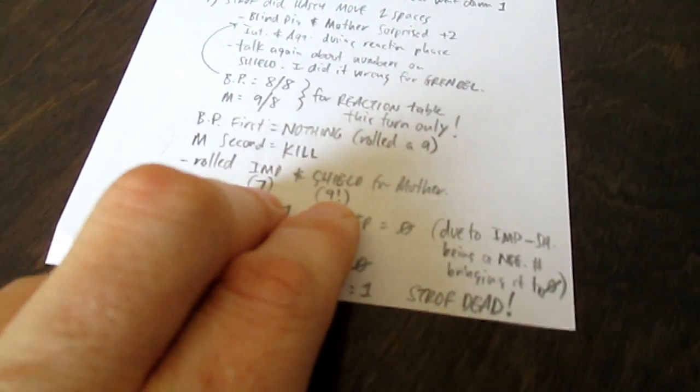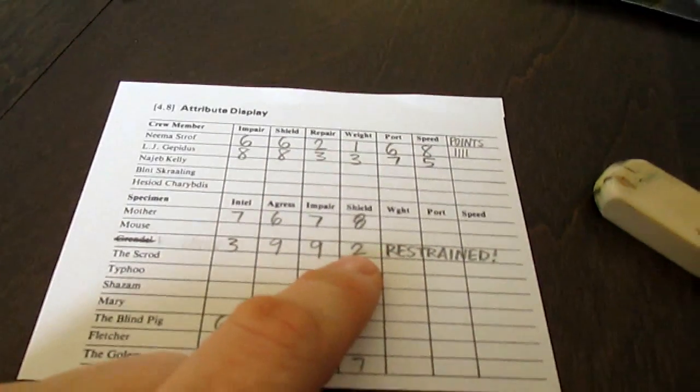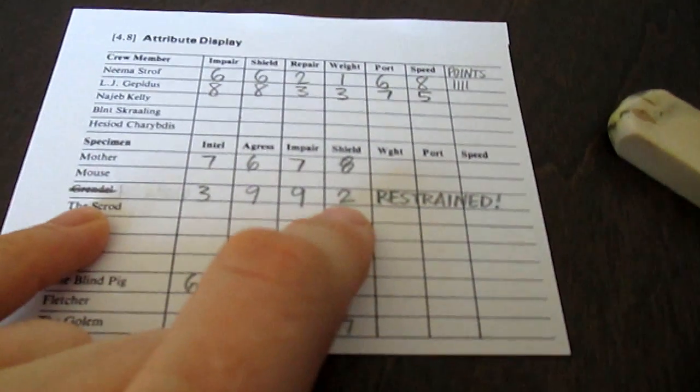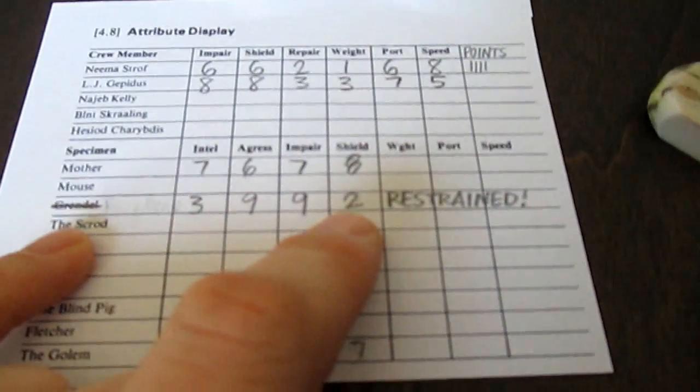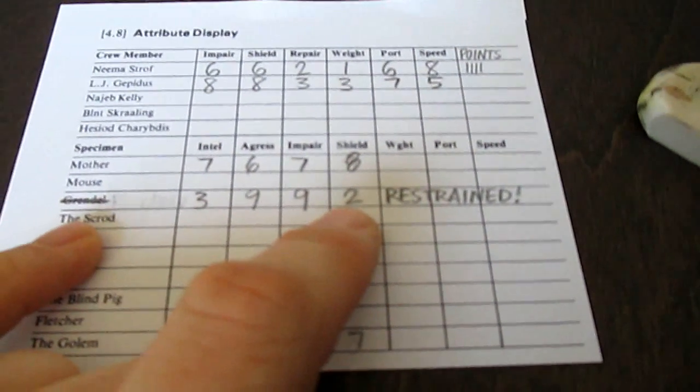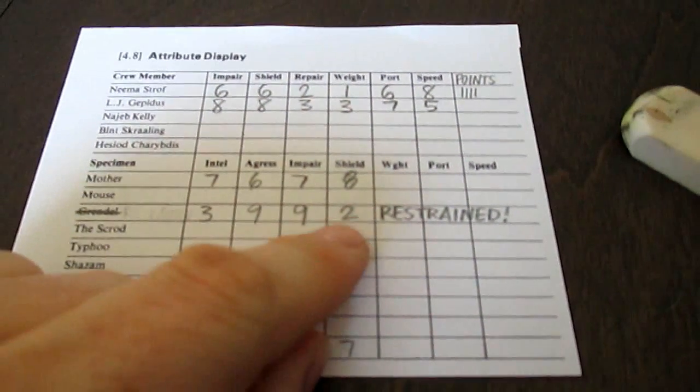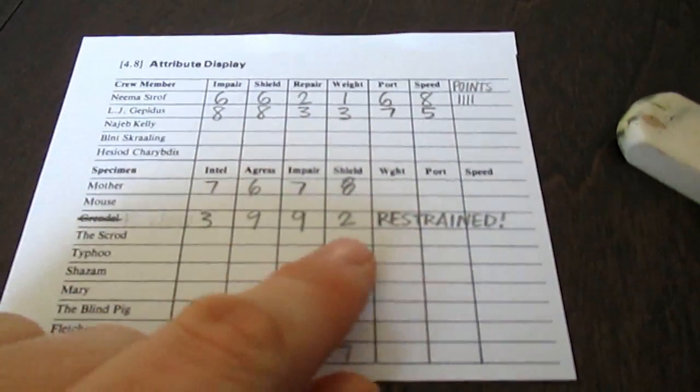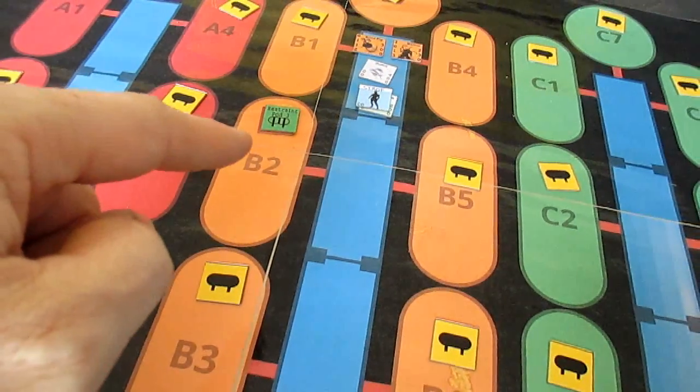Then I rolled the other stats for mother and it was a seven and a nine. What I did before for Grendel, when it told me to have that number, it was only half of the number. It was supposed to be only half of the original number just when referring to the charts to do your subtraction. It doesn't actually mean that the number went down.